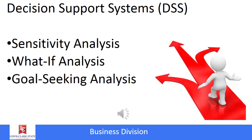Decision support systems can do primarily three different things. The first is sensitivity analysis — a study of the impact of one variable and how it might be affected by another. This is similar to linear regression; however, sensitivity analysis can also be used when the relationship between two variables is not linear.